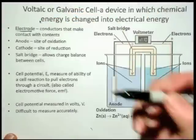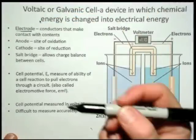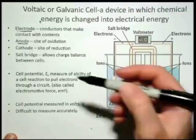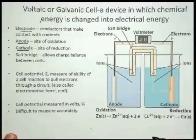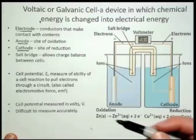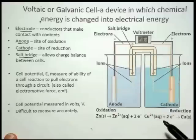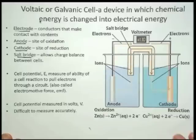And here are the terms that you should be aware of. The electrode - those are the conductors that make contact with the contents. The anode is the site of oxidation, and the cathode is the word that we refer to as the site of reduction. The salt bridge, of course, is the connector that allows the ions to flow to keep the charge balanced in the two half cells.